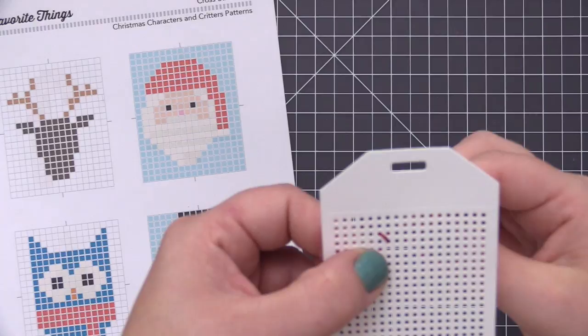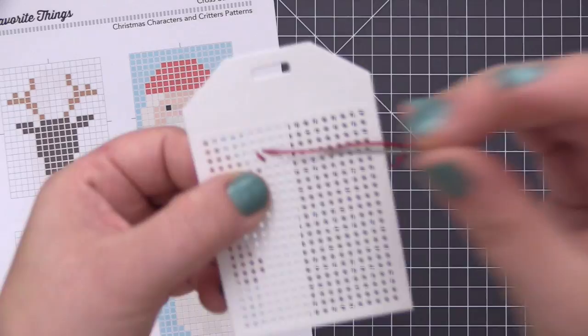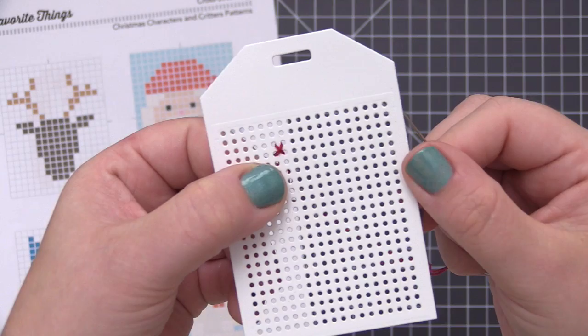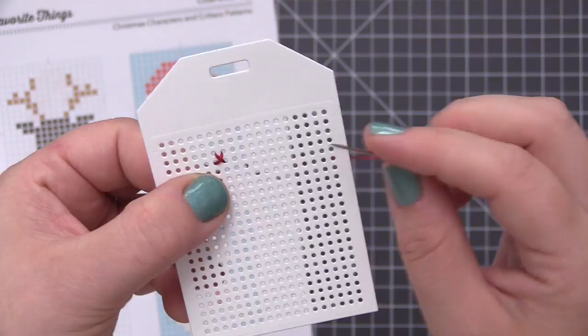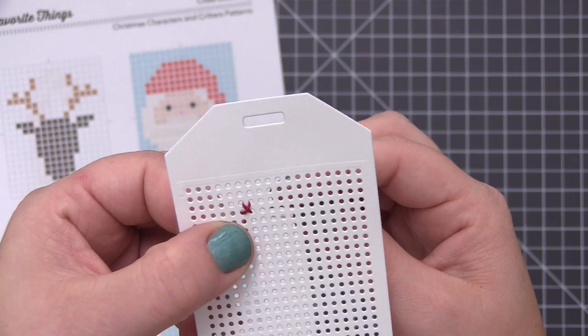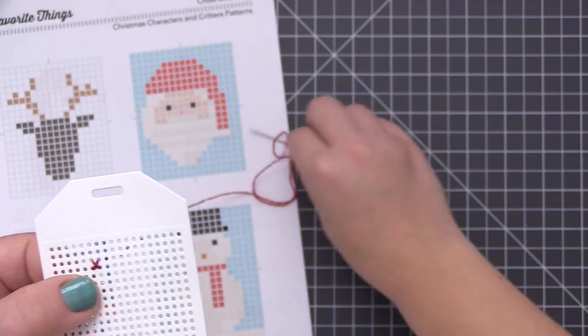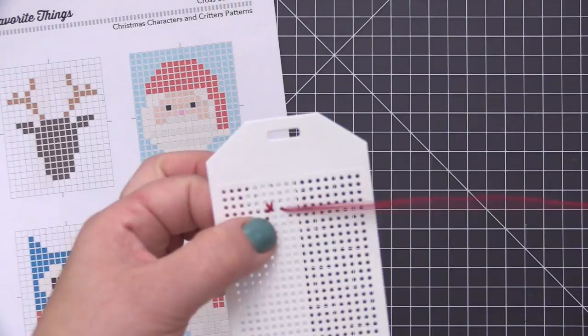One thing that I do recommend when you are doing any type of cross stitching is to always make sure that your X's are going in the same direction. You always want to make sure that the bottom of the X is going in one direction and the top of the X is going in the other direction. Once you've decided what that is with your first stitch, you just want to stay consistent with that as you do your sewing. It's not the end of the world if you change it up, but you definitely will notice in the finished design, especially if you fill the entire tag with stitches.